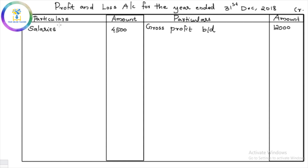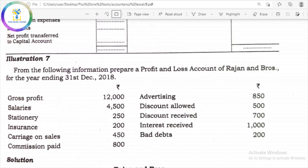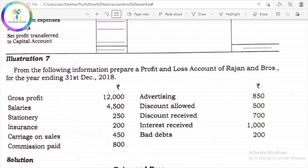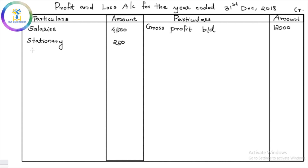Wages are for daily or temporary workers — that is a direct expense going to the trading account. Salary is an indirect expense going to the profit and loss account. Next is stationery — stationery is an indirect expense. Then insurance charges: insurance premium is ₹200, which is an office-related indirect expense.